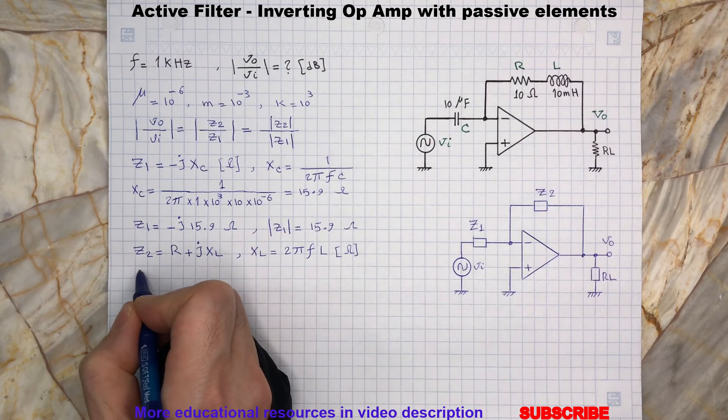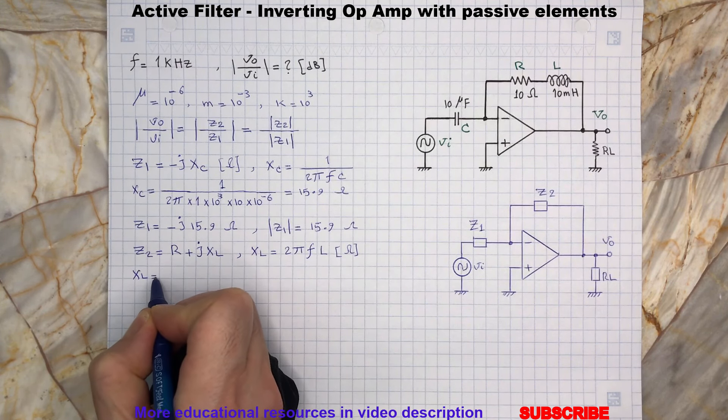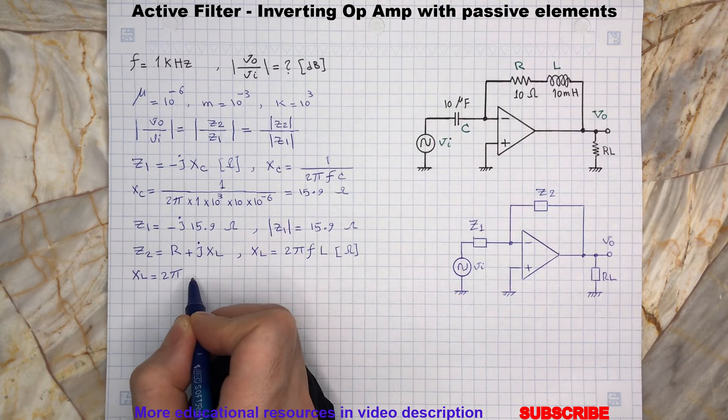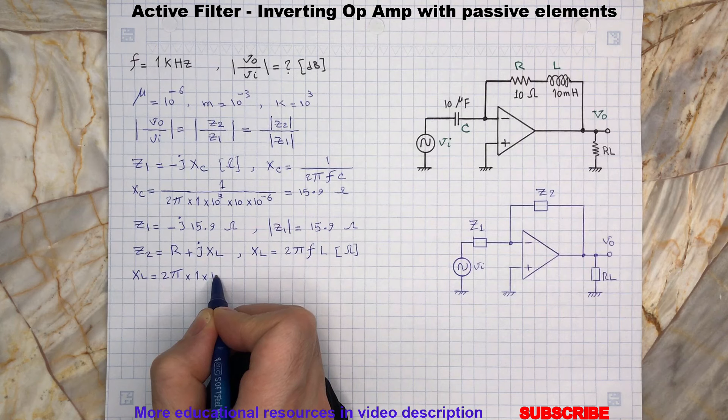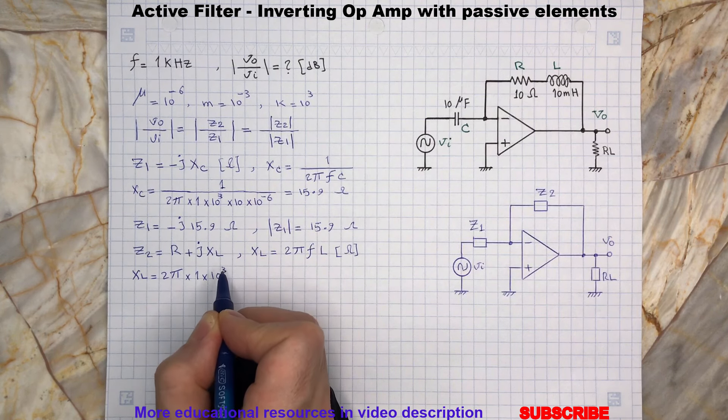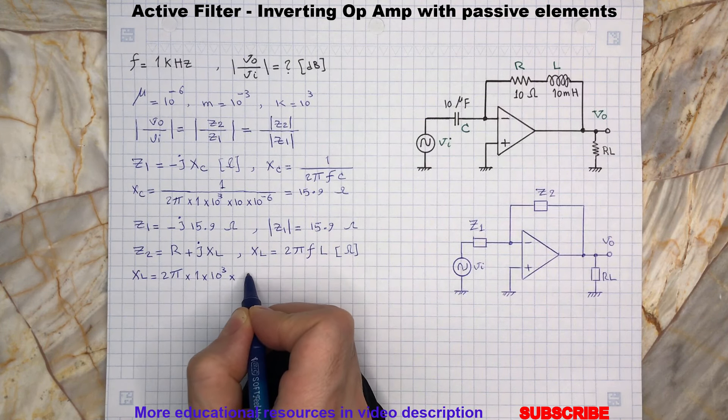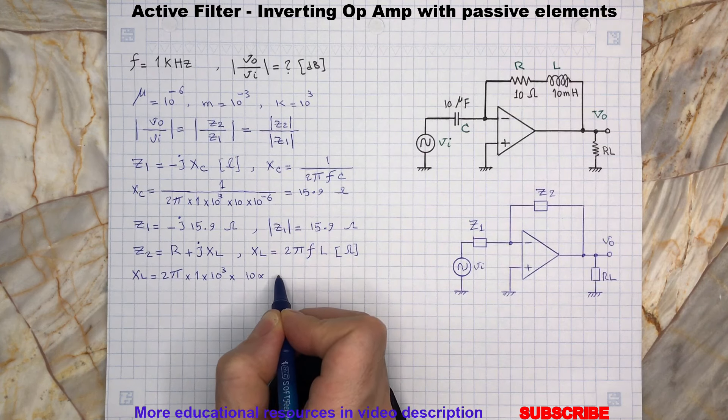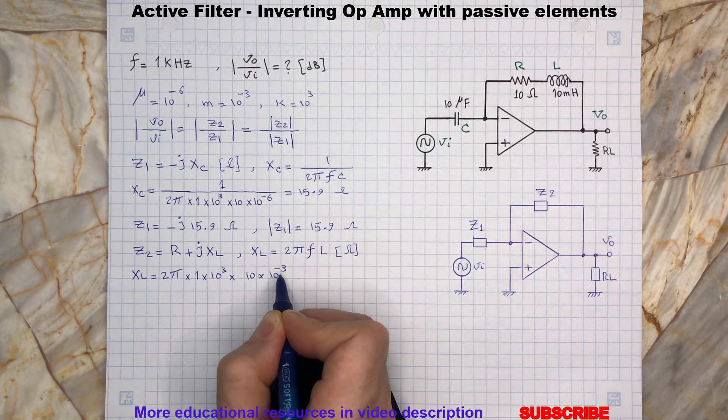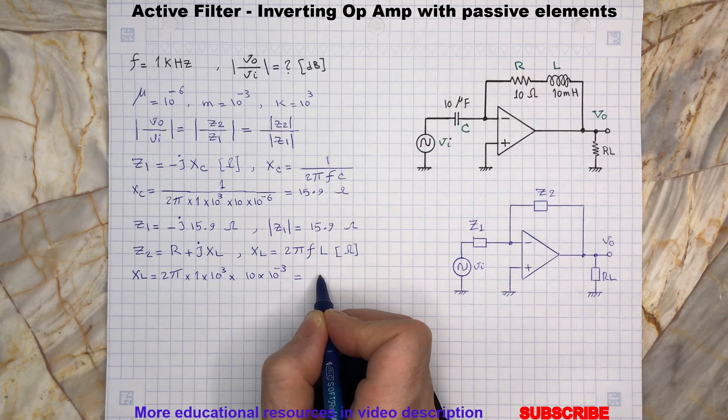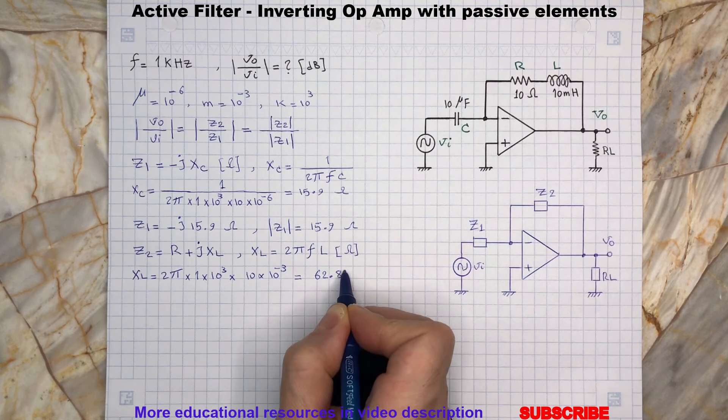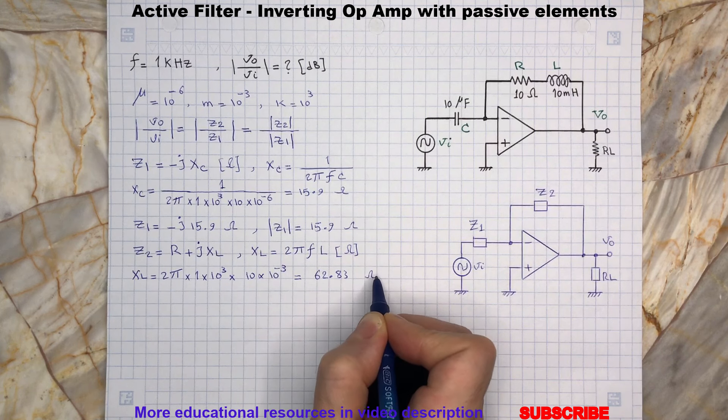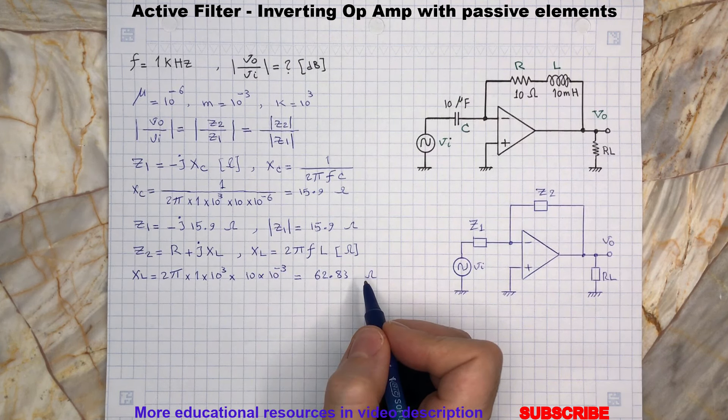So the impedance Z2 is calculated with the real and imaginary components.